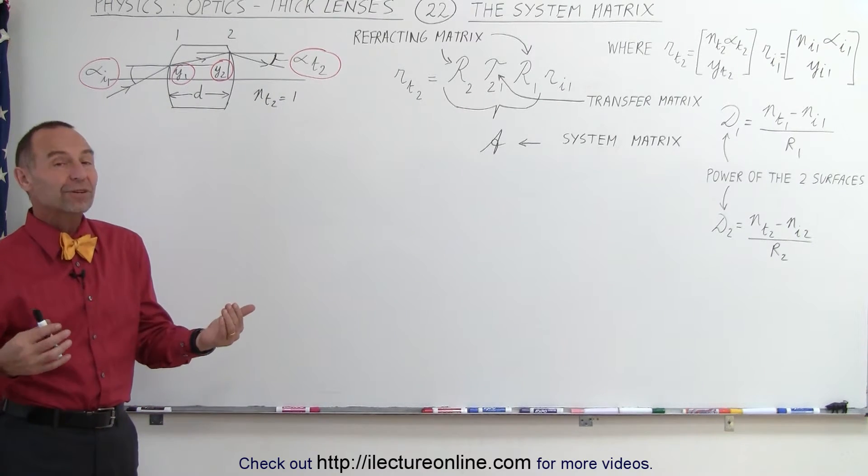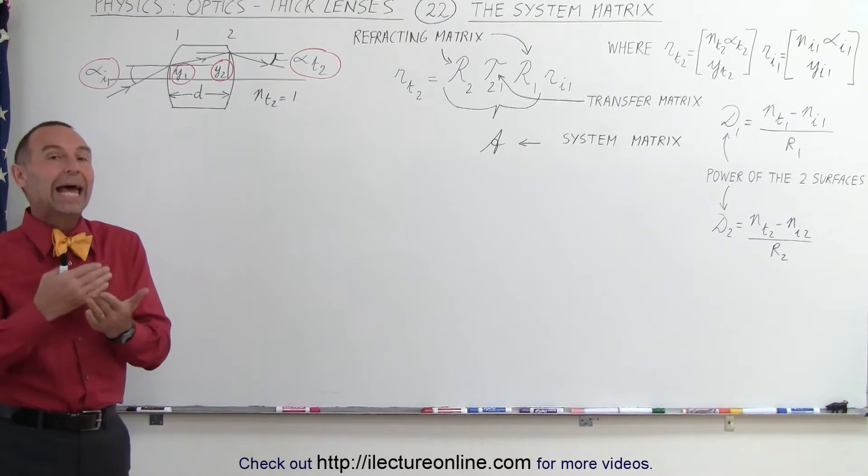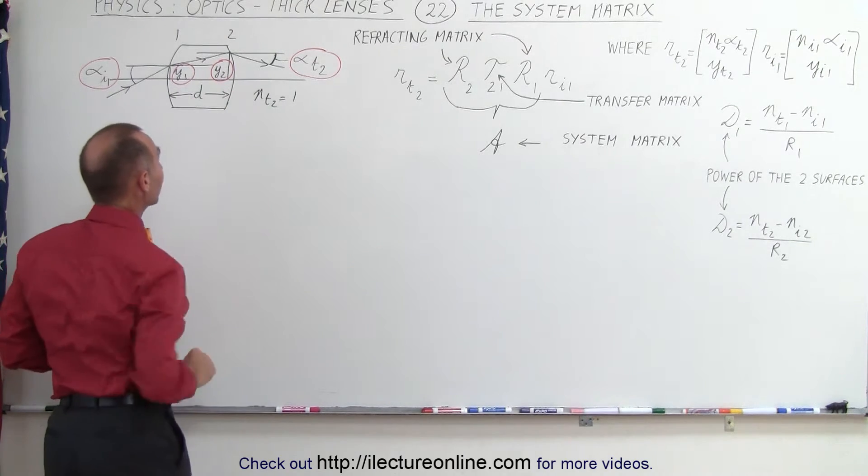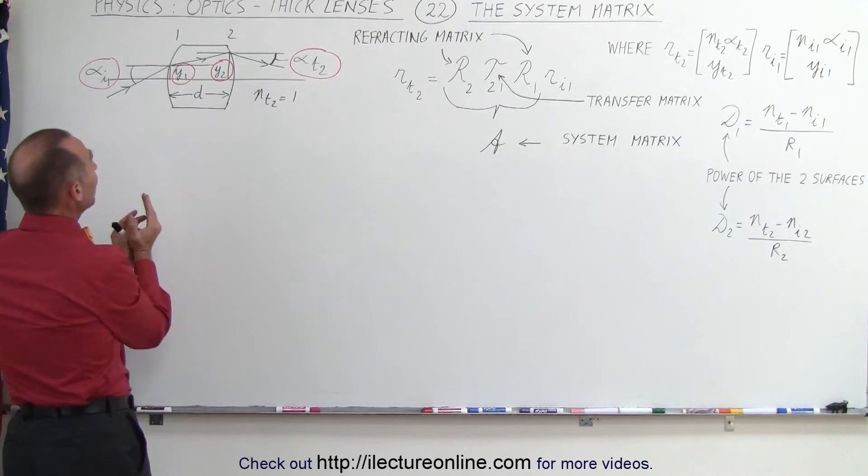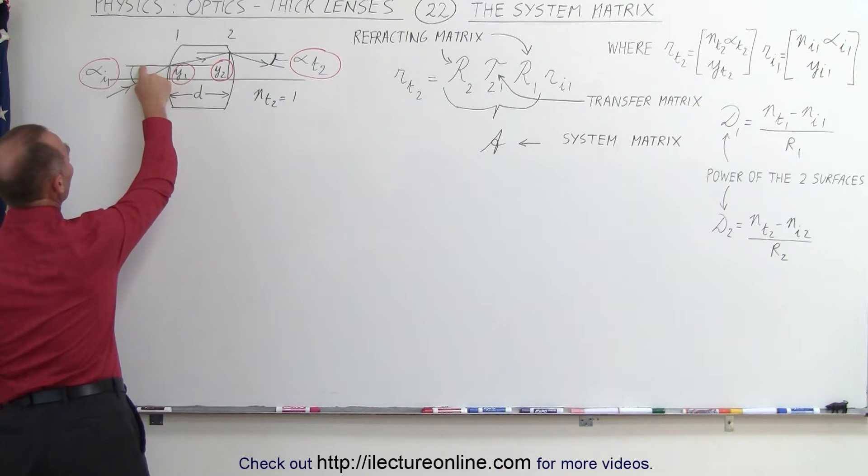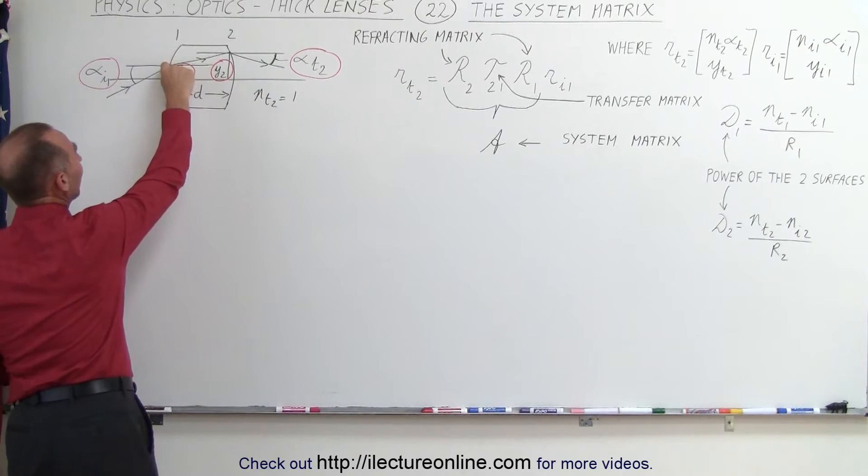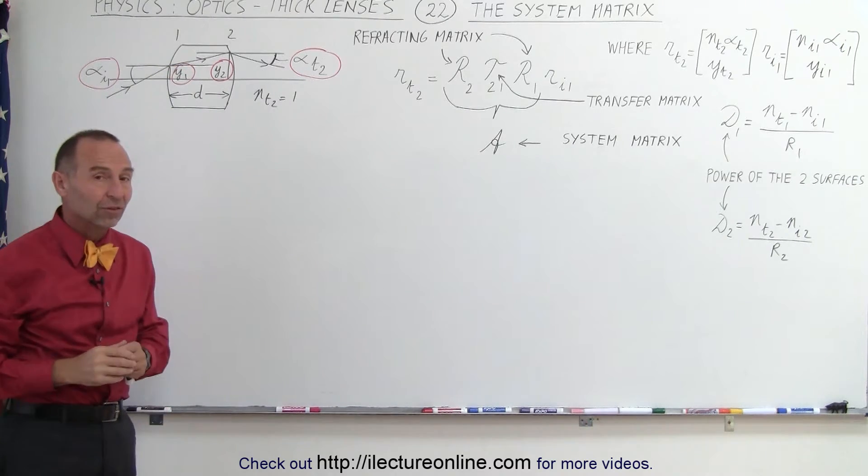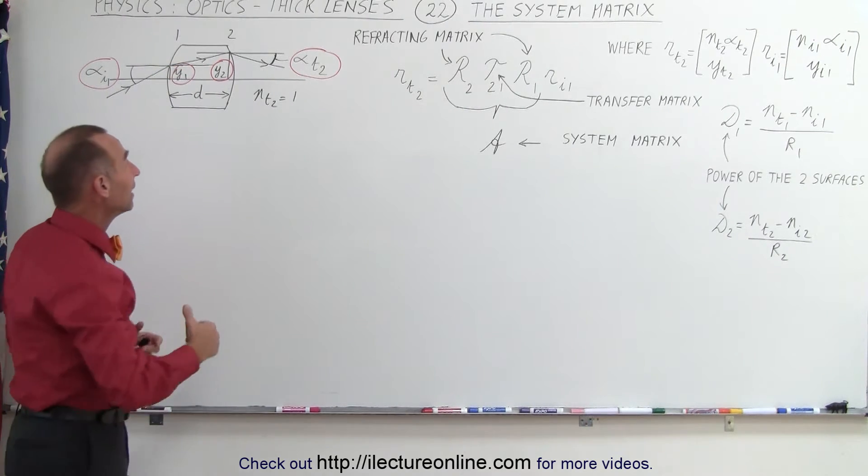What is the system matrix? It's the matrix that defines what happens to a ray that travels through a thick lens. Notice the information we have about the ray as it enters the thick lens is the angle relative to the horizontal and the distance of the entry point relative to the optical axis.